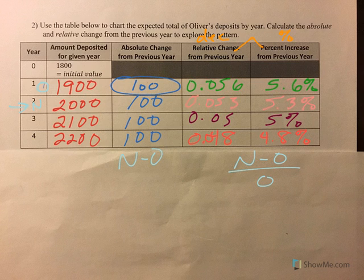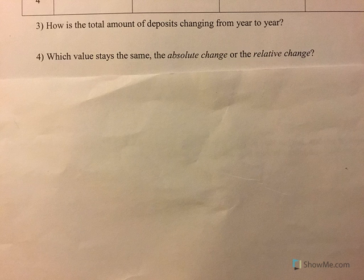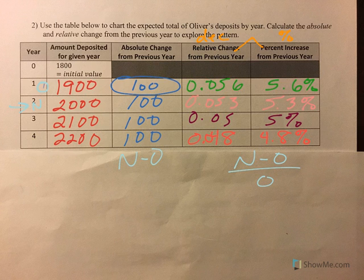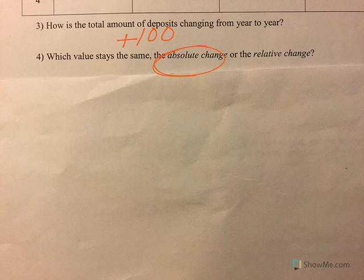Hopefully when you look at this table you see some things. So let's answer some questions. How is the total amount of deposits changing from year to year? We added $100 every year — that's an increase. What was the same? Absolute change was the same because we added $100 each time.